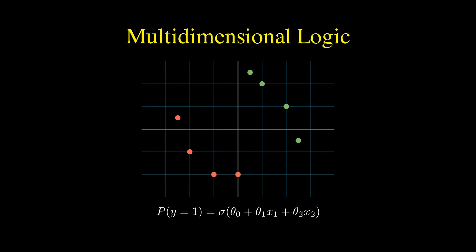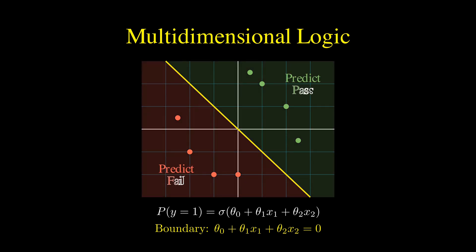Interestingly, if we cut through the point where the probability is exactly 50%, we get a straight line. This is called the decision boundary. Even though the probability function is curved, the line that separates the pass region from the fail region is linear.